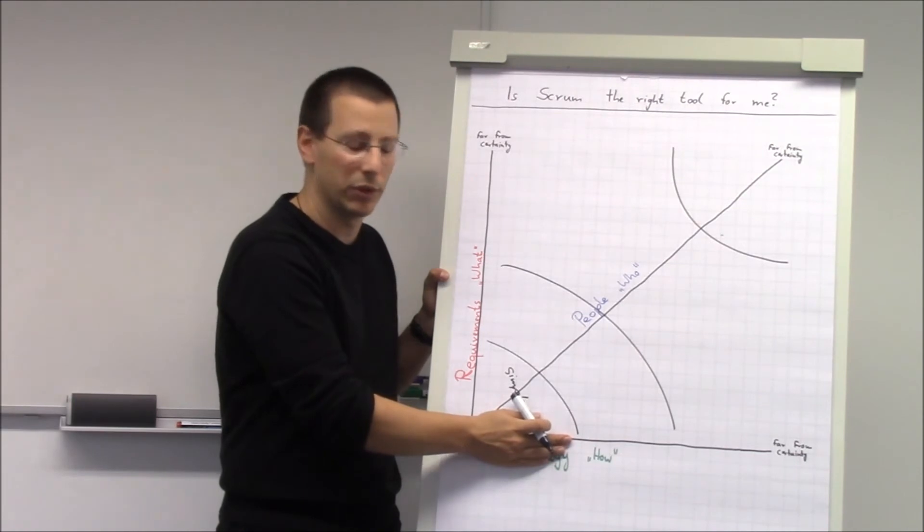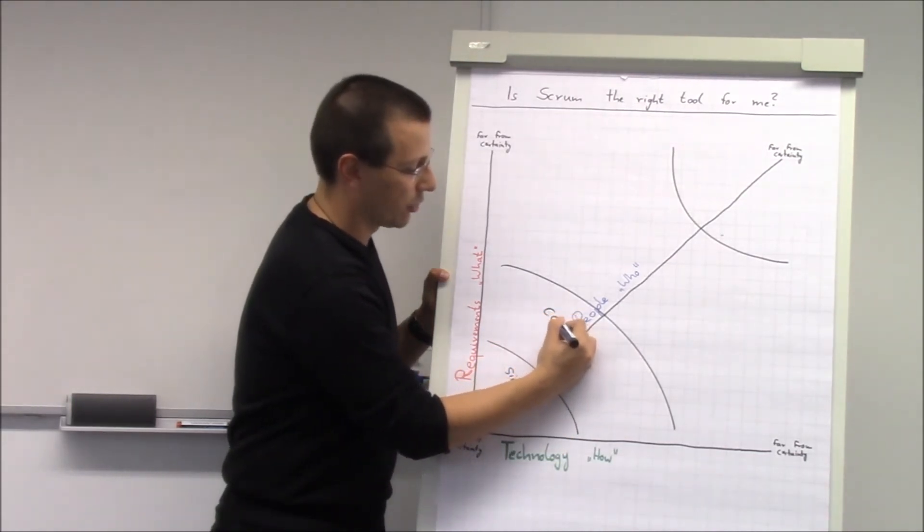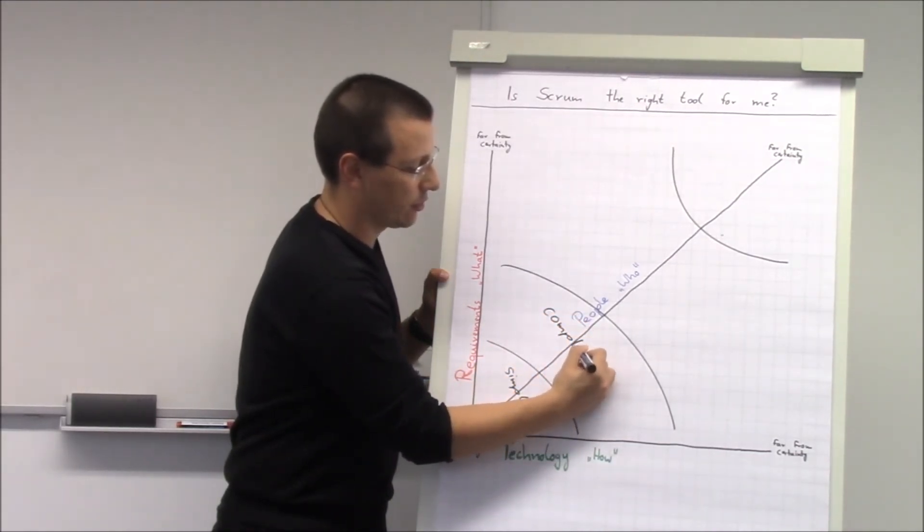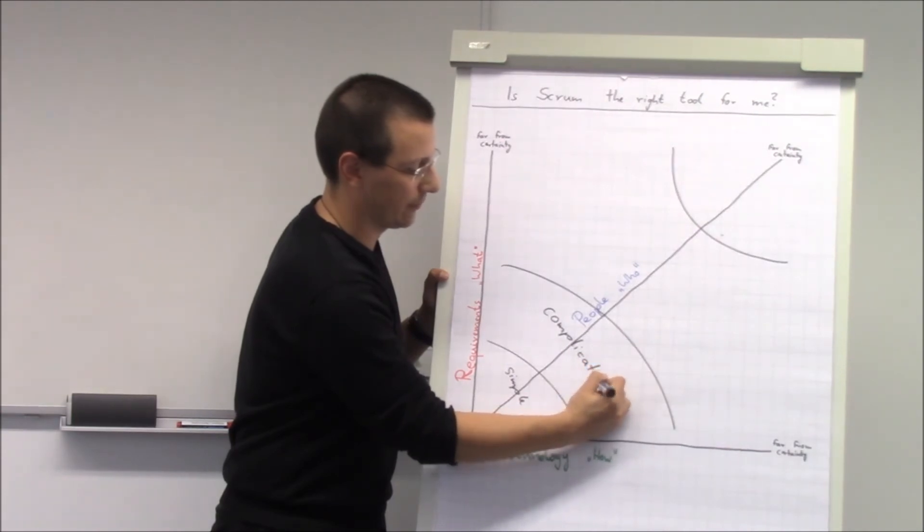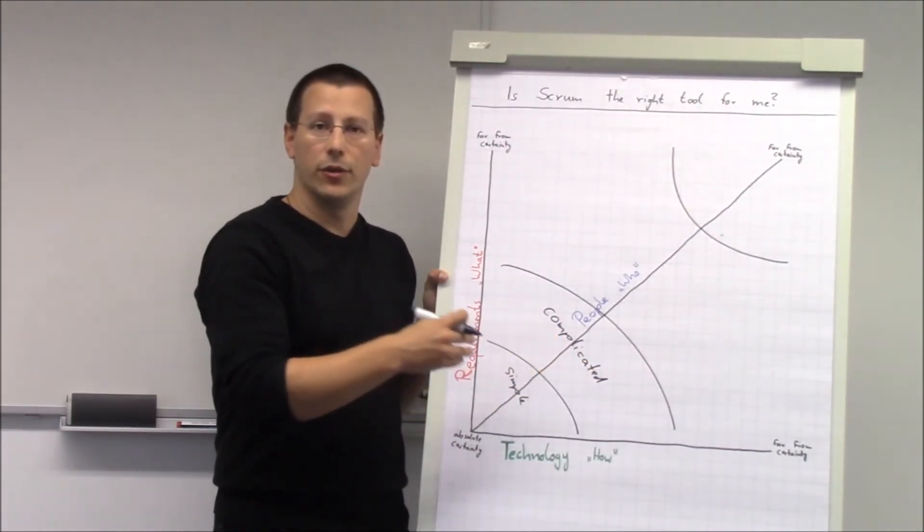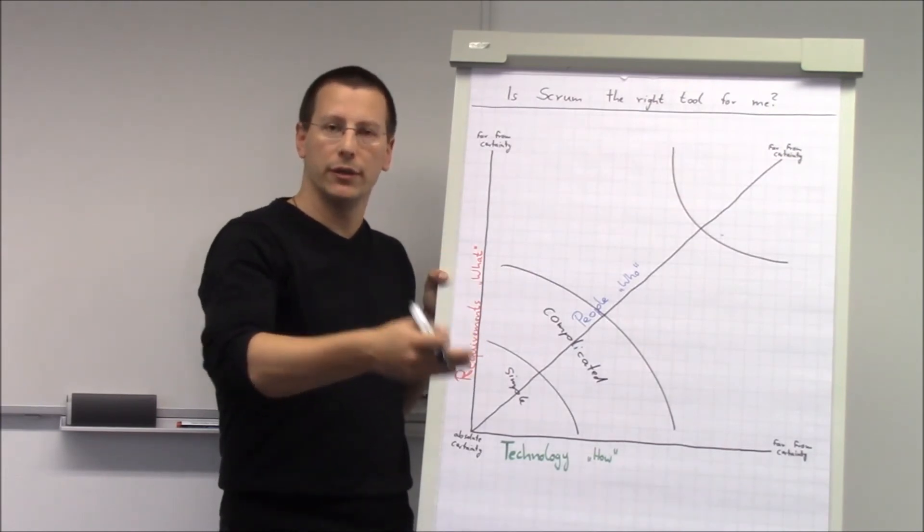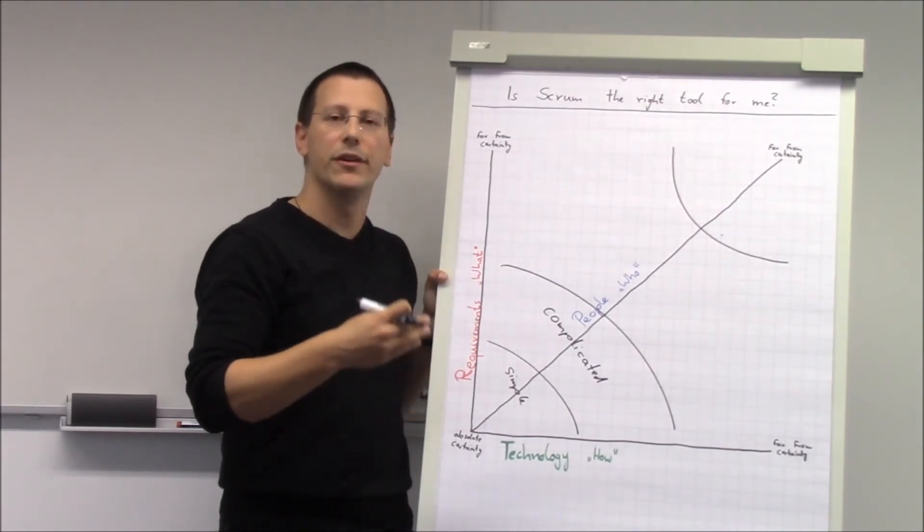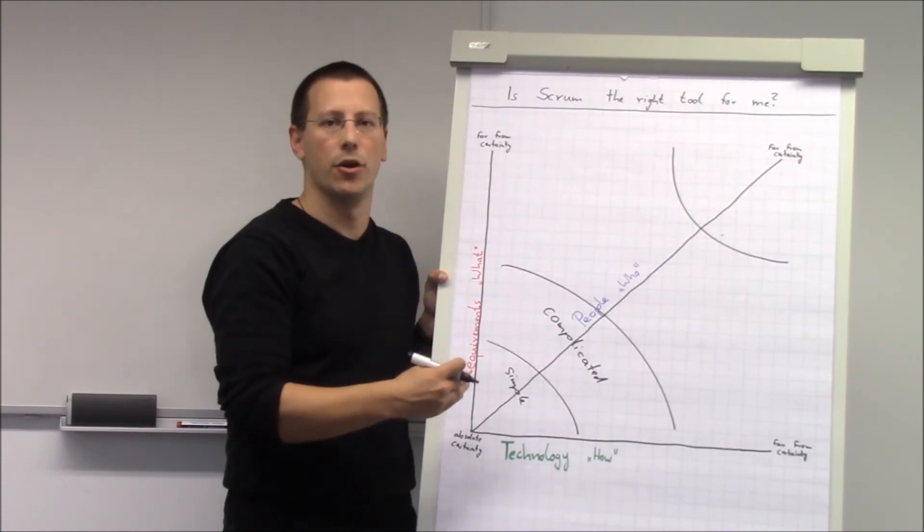The second quadrant is called complicated. It is characterized as there's more known than unknown, but there is some stuff that is unknown.